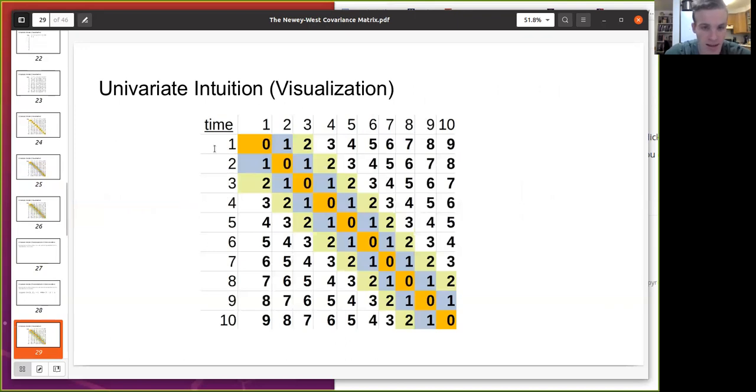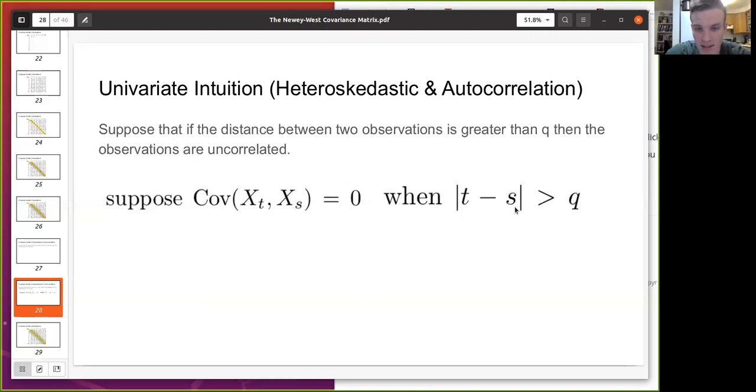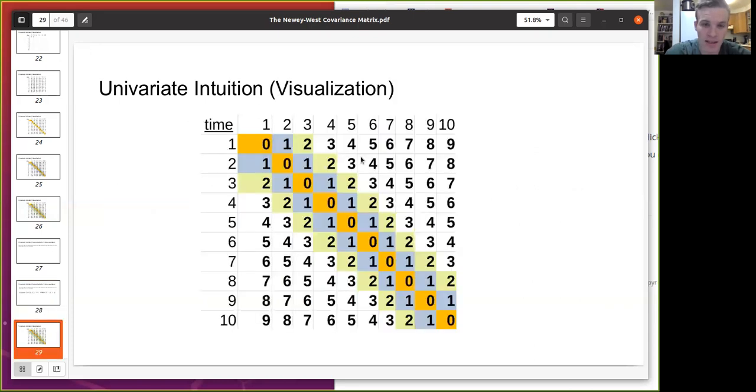And so looking at this, let's say like only our colored boxes are the ones that we keep, then what would Q equal in this case? Well, T minus S needs to be greater than Q, right? And for it to go to zero. So in this case, our Q is two, right? So because once it goes past two, we no longer include them.